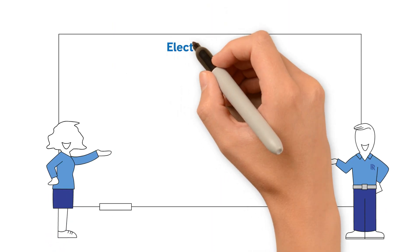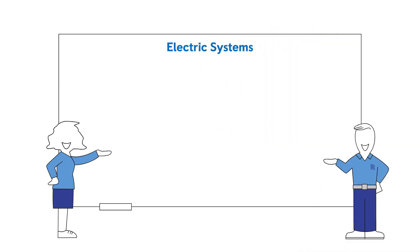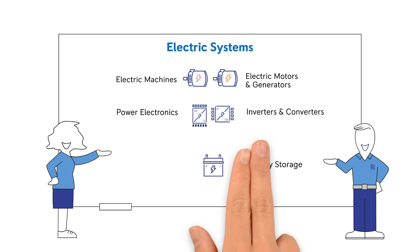So, in principle, our electrical systems consist of electric machines for conversion between mechanical and electrical energy, power electronics for electrical power state conversion, and energy storage devices.